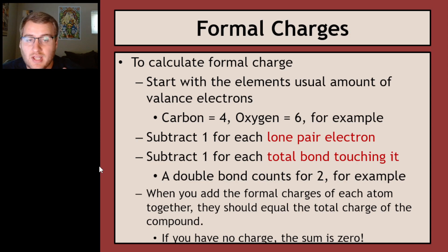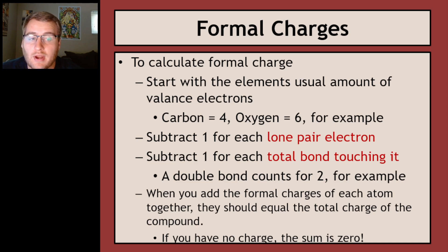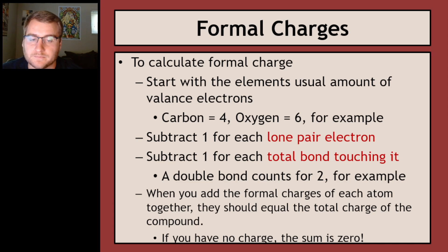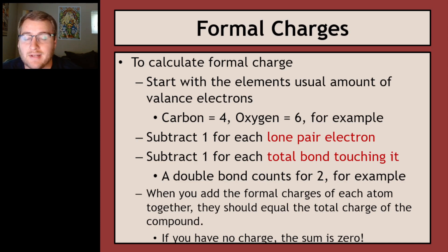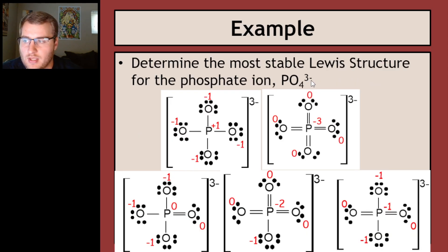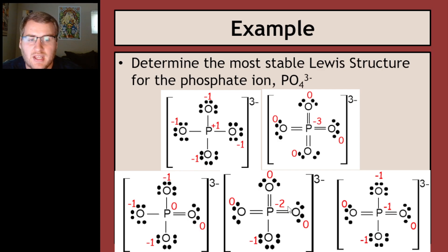To calculate formal charge: start with the element's usual valence electrons — carbon is 4, oxygen is 6, fluorine is 7. Subtract one for each lone pair electron (each dot), and subtract one for each total bond touching it — so a single bond subtracts 1, a double bond subtracts 2, a triple bond subtracts 3. Also, when you add together all the formal charges at the end, their sum should equal the charge of the ion, or zero if it's a neutral molecule. For the phosphate examples, the charge is minus 3, so all formal charges on all atoms should add up to negative 3.